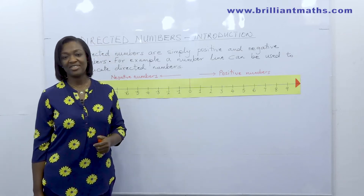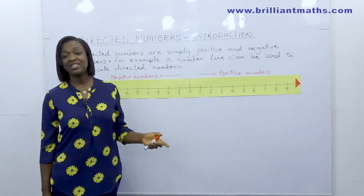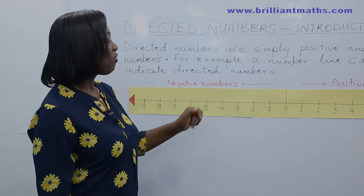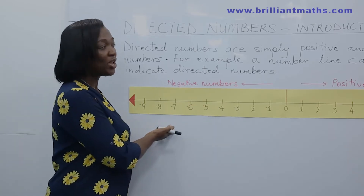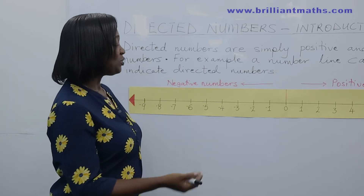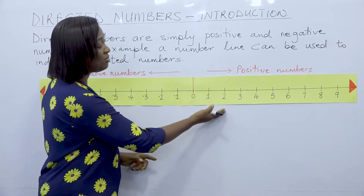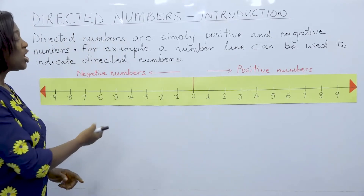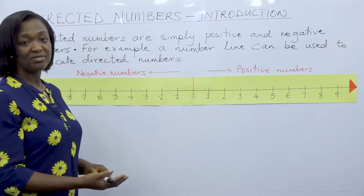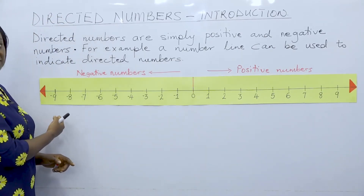What are directed numbers? Directed numbers are simply positive and negative numbers. For example, a number line can be used to indicate directed numbers. Zero is midway between positive numbers and negative numbers. Numbers to the right of zero are positive, and numbers to the left of zero are negative.